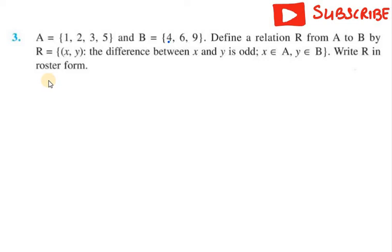As it is given here that the difference between x and y should be an odd number, we can take 1 and 4. So 1 and 4 makes 3. We can take 1 and 6, which makes 5. 6 minus 1 is 5. Then 1 and 9 couldn't be there because it will be 8. So therefore we won't write 1 and 9.